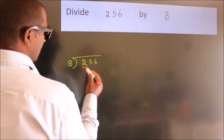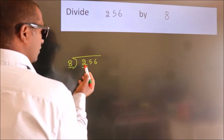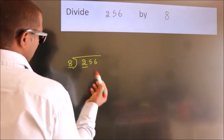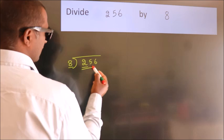here we have 2. Here 8. 2 smaller than 8. So, we should take 2 numbers: 25.